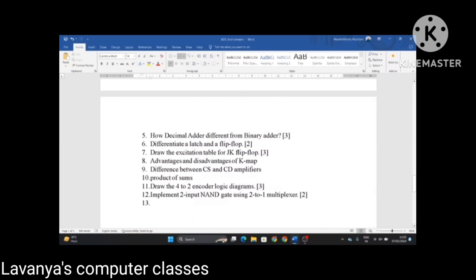Differentiate a latch and a flip-flop. Draw the excitation table for a JK flip-flop. Advantages and disadvantages of KMAP. Difference between CS and CD amplifiers.